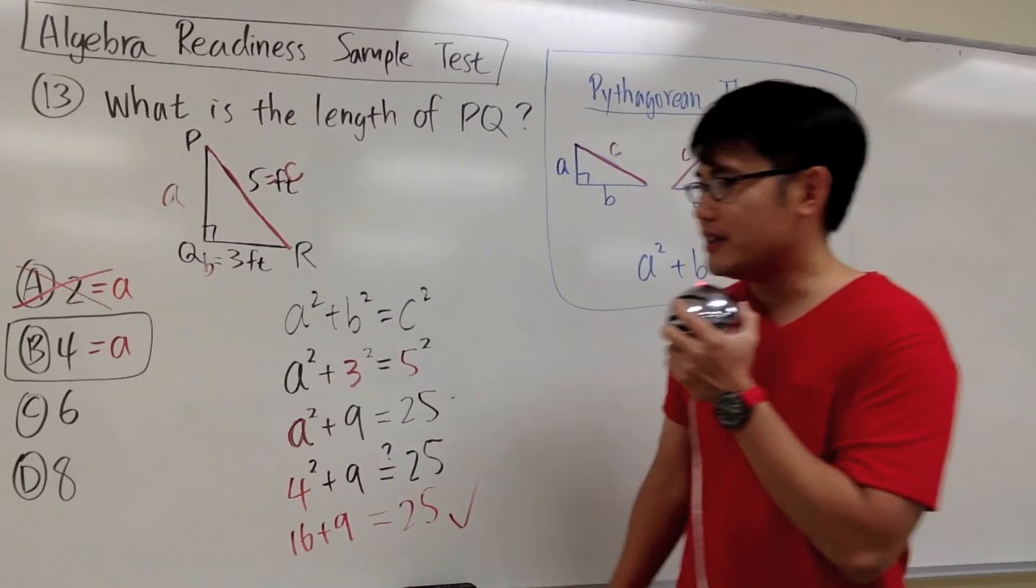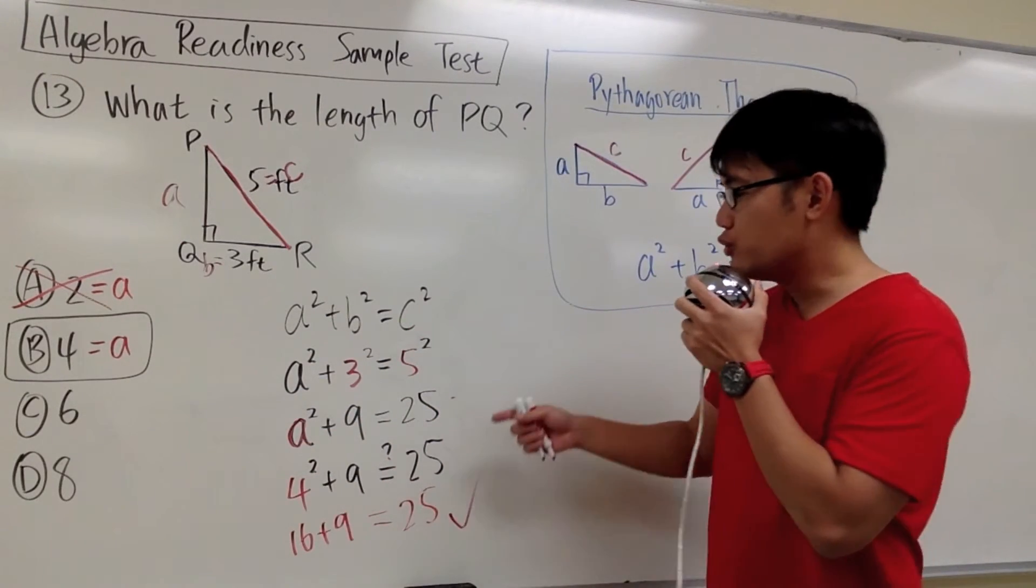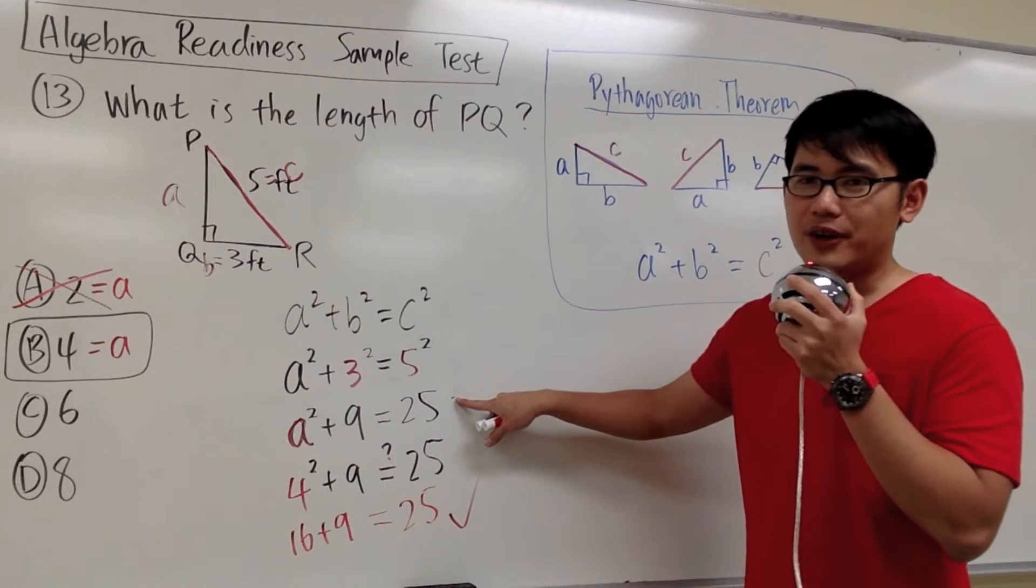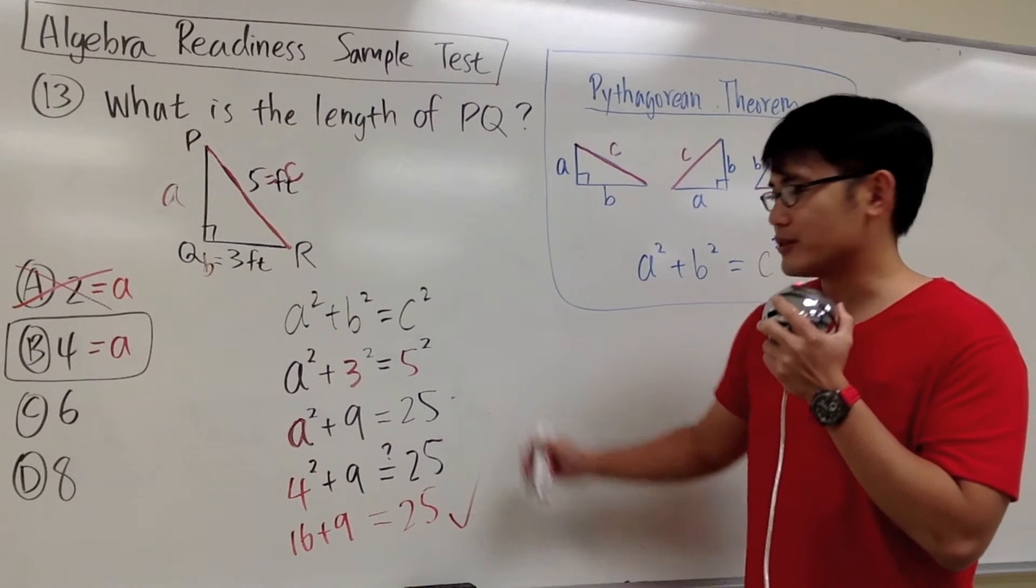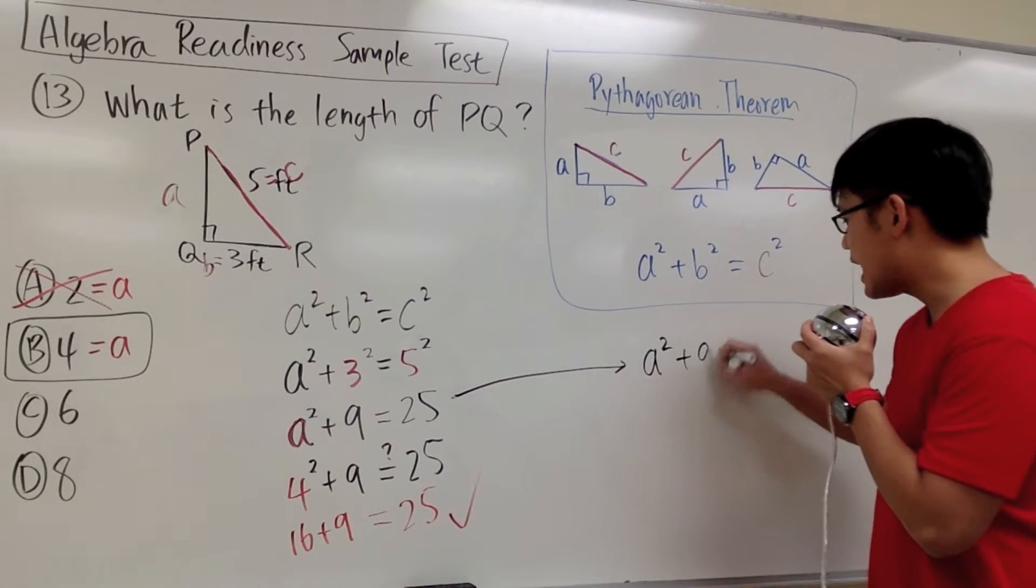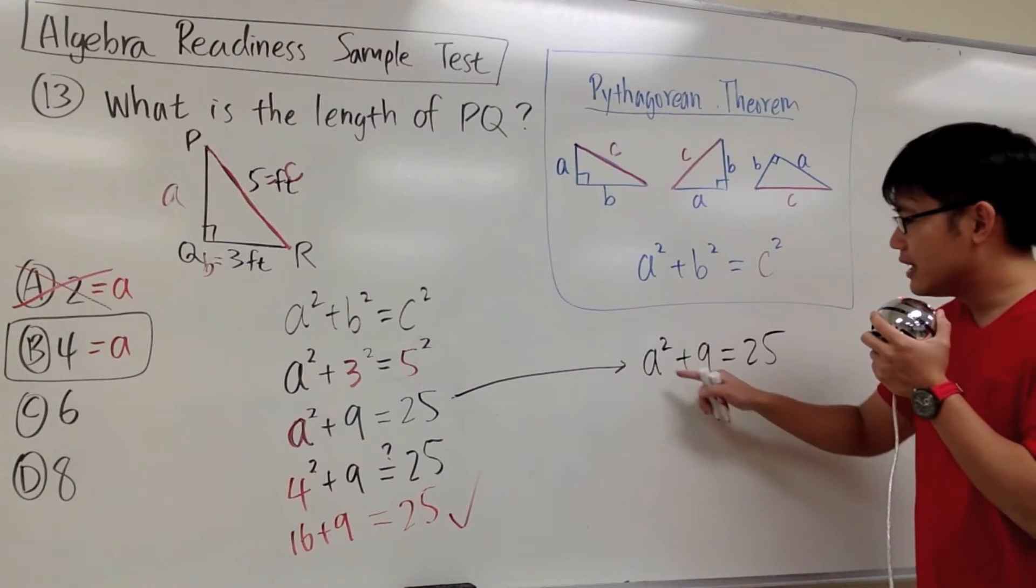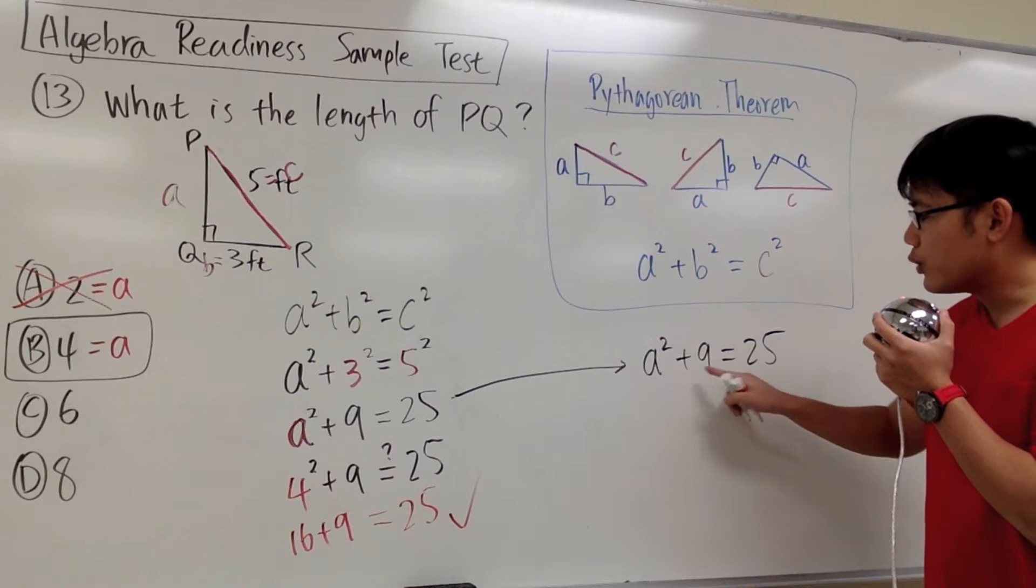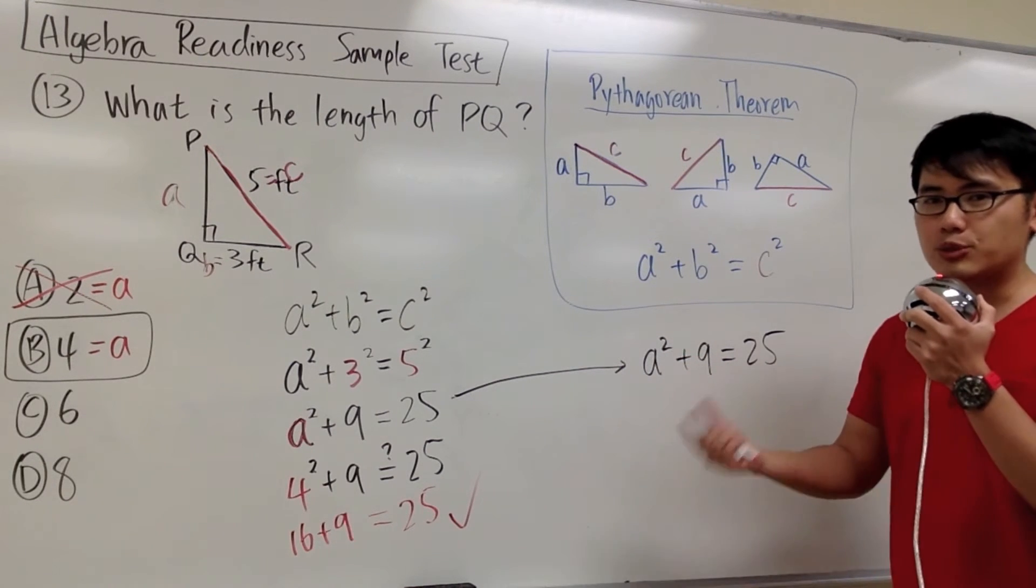But unfortunately, we may not always have the answer choices in front of us. Therefore, for future benefit, let me show you guys the algebra steps to solve this question. A squared plus 9, that will give us 25. This is how we are going to do it. A squared plus 9, we will first get rid of the plus 9. The opposite of plus 9 is to subtract 9. So we have minus 9 right here, and we'll do the same right here.